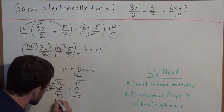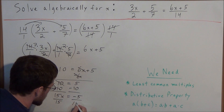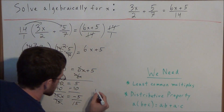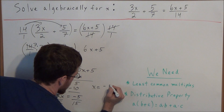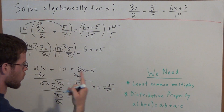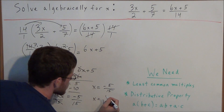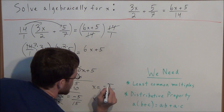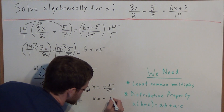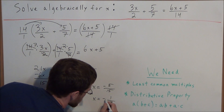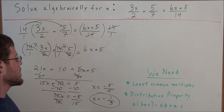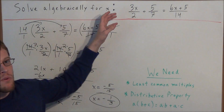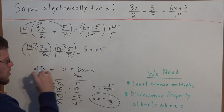The last step for solving for x is to divide both sides by 15. We have 15 divided by 15 cancels, leaving x equals negative 5 over 15. But we have one more step — we need to simplify this fraction. The common factor of 5 and 15 is 5, so 5 divided by 5 is 1 and 15 divided by 5 is 3. The final answer is x equals negative 1 third. Remember, using least common multiples allows us to simplify an algebra problem with fractions to a basic single-variable equation with whole numbers.